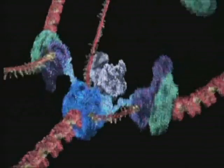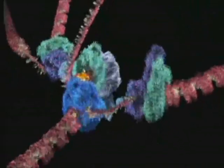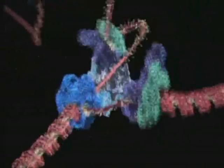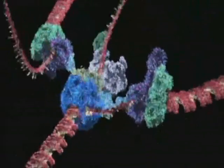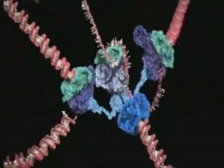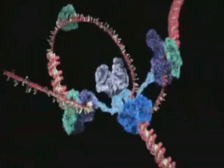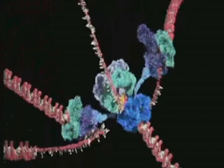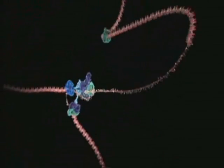One strand is copied continuously and can be seen spooling off to the right. Things are not so simple for the other strand because it must be copied backwards. It is drawn out repeatedly in loops and copied one section at a time.